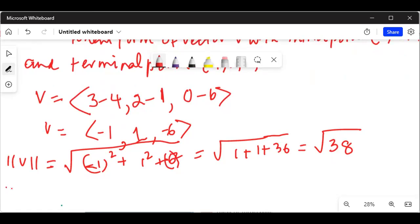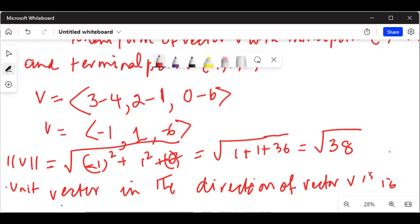Now if we write the unit vector in the direction of vector V, it is equal to V over magnitude of V.